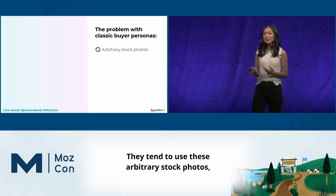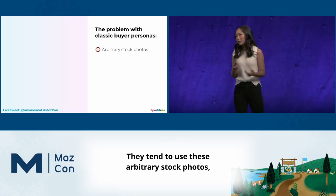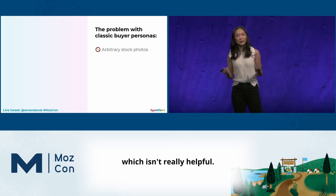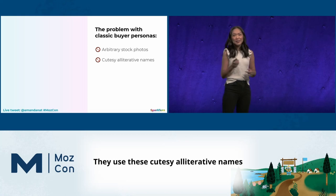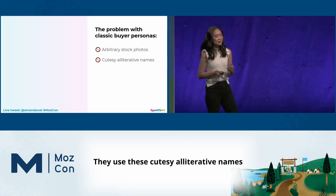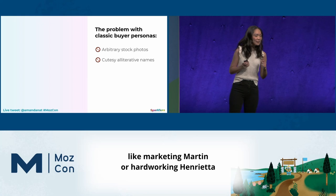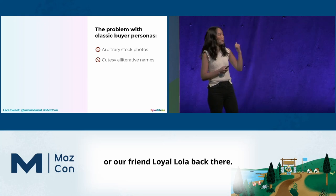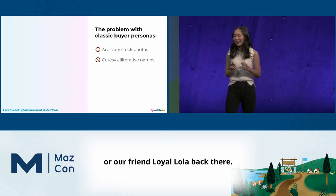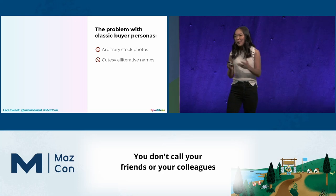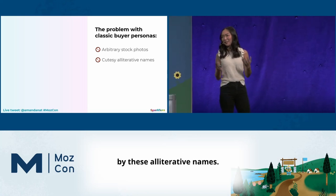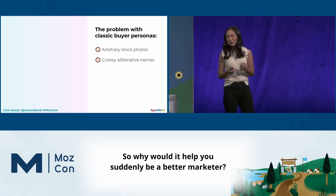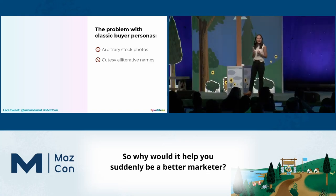They tend to use these arbitrary stock photos, which isn't really helpful — it's not a picture of your customer. They use these cutesy alliterative names like Marketing Martin or Hardworking Henrietta or our friend Loyal Lola. You don't call your friends or colleagues by alliterative names, so why would it suddenly make you a better marketer?